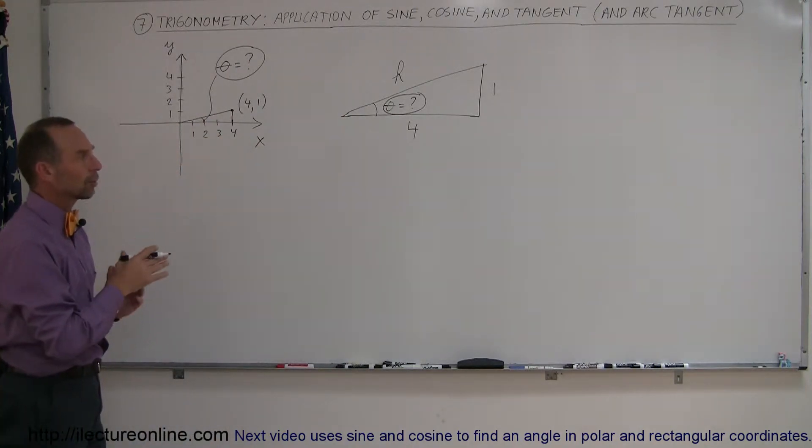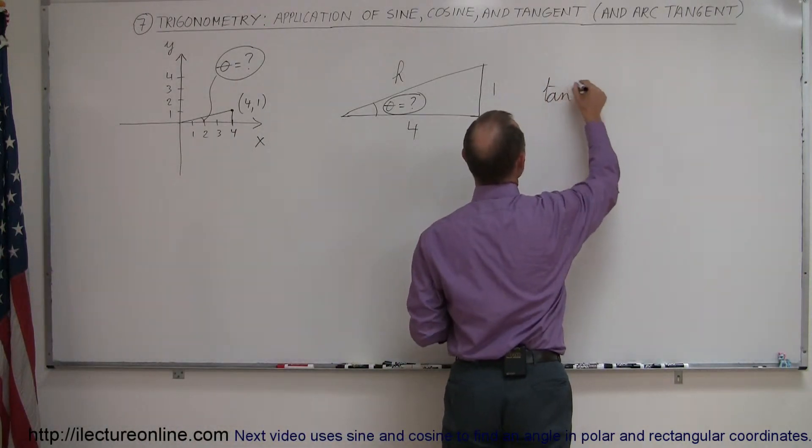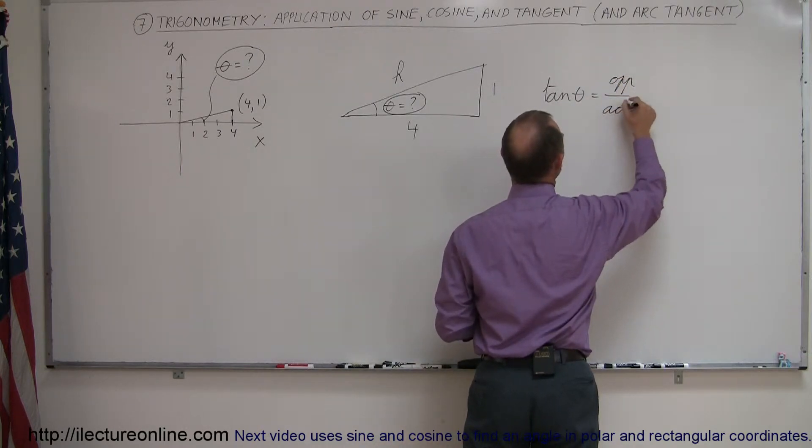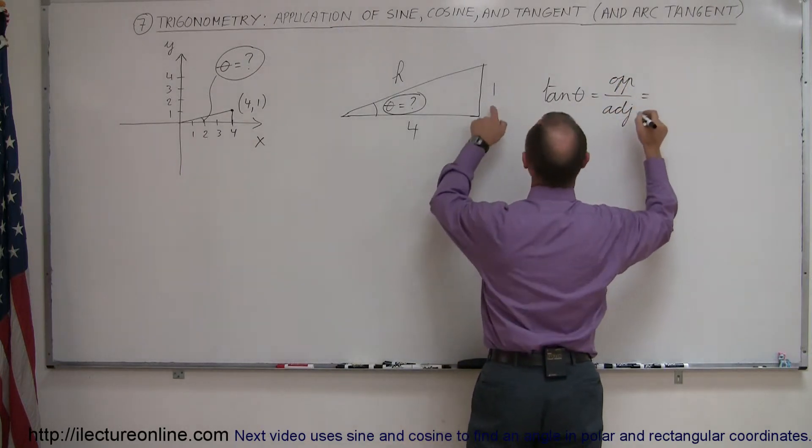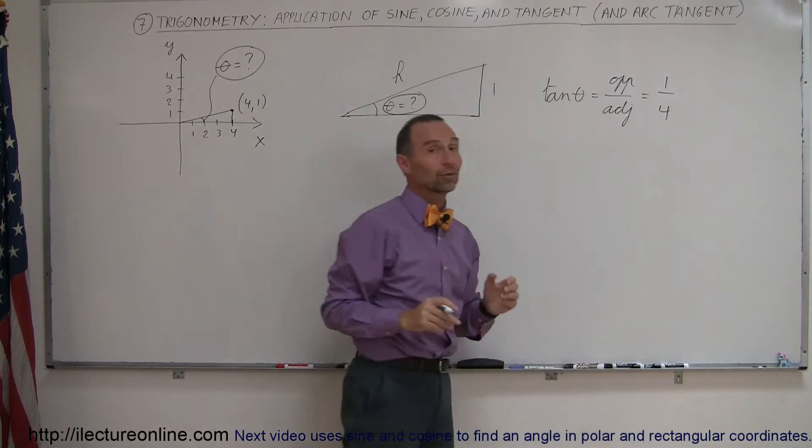So we have the angle that we're looking for. We have the opposite adjacent side. That sounds like the tangent, because we know that the tangent, by definition, is equal to the opposite side over the adjacent side. And in this case, the opposite side would be 1, and the adjacent side would be 4. And now we're looking for the angle. So what do we do next?